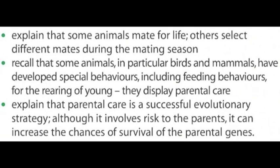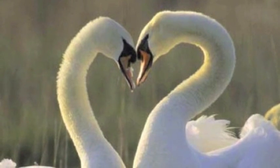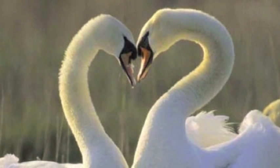Lesson number six: mating systems and parental care. By the end of this lesson you should be able to explain that some animals mate for life, others select different mates during the mating season, and recall that some animals — in particular birds and mammals — have developed special behaviors including feeding behaviors for the rearing of young. They display parental care, and explain that parental care is a successful evolutionary strategy. Although it involves risks to the parents, it can increase the chances of survival of the parental genes.